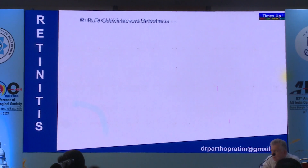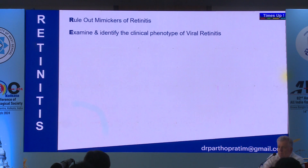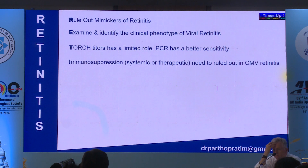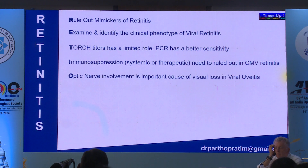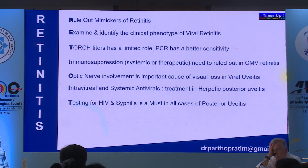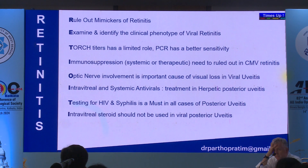In conclusion: rule out non-infectious mimics of retinitis; examine and identify the clinical phenotype of viral retinitis. TORCH titers have limited role; PCR has better sensitivity. Rule out systemic or therapeutic immunosuppression in CMV retinitis. Optic nerve involvement is an important cause of visual loss in viral uveitis. Intravitreal and systemic antiviral combination is the mainstay in herpetic posterior uveitis. HIV and syphilis testing is a must in all posterior uveitis cases. Intravitreal steroids should not be used in viral posterior uveitis.